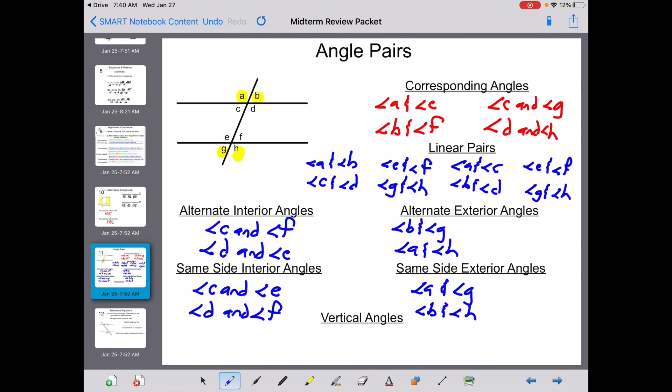Your verticals are your bow ties, so those are diagonal to each other. C and B. A and D. E and H. And F and G.